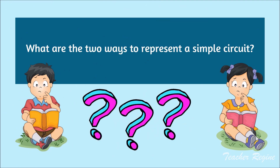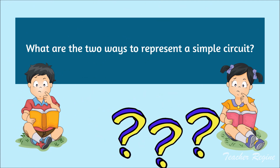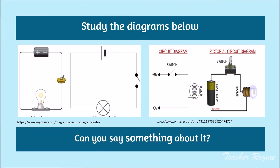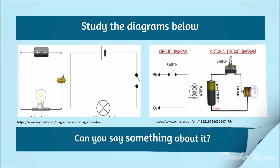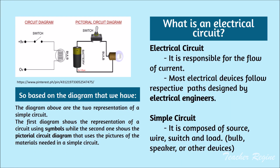What are the 2 ways to represent a simple circuit? Study the diagrams below. Can you say something about it? Based on the diagram that we have, the diagrams above are the 2 representations of a simple circuit. The first diagram shows the representation of a circuit using symbols, while the second one shows the pictorial circuit diagram that uses pictures of the materials needed in a simple circuit.